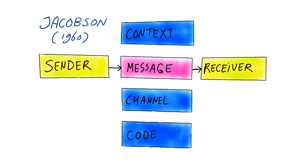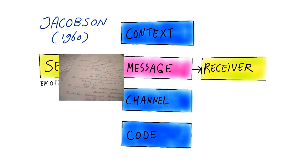Let's review these functions that Jacobson identified. When the primary purpose of a message is to communicate the emotions and attitudes of a sender, this is called the emotive function. For instance, when I write a love letter to my girlfriend.